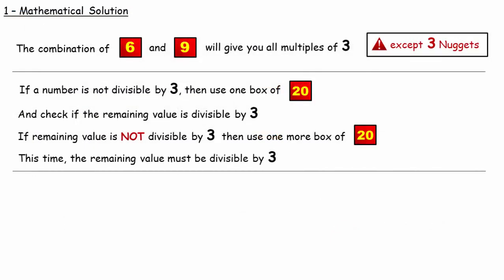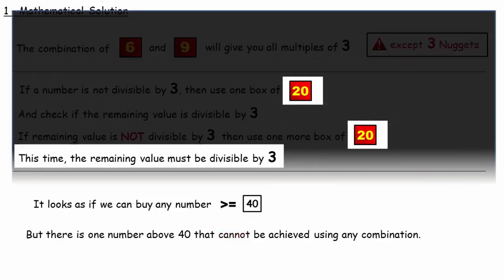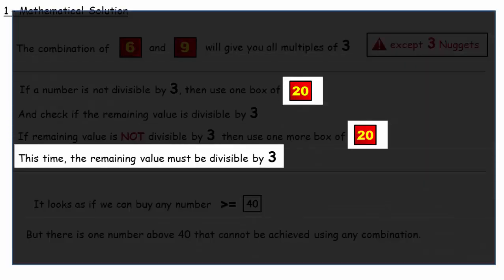Now we have reached the critical part of the solution. With the approach we have seen, it looks like we can buy any number of nuggets greater than or equal to 40. But interestingly there is one number above 40 that cannot be achieved using any combination.